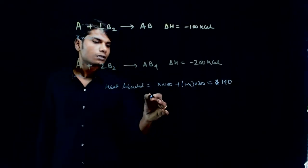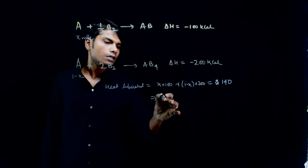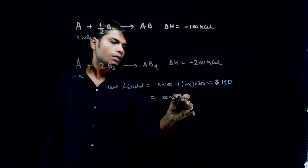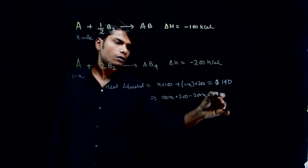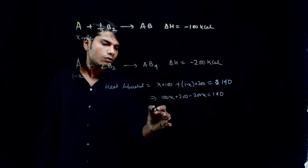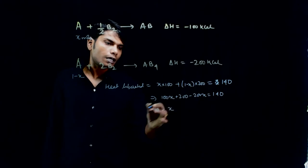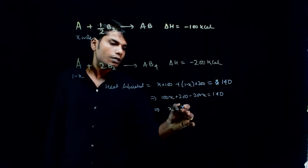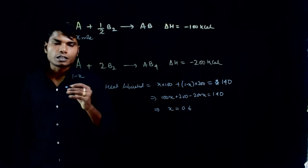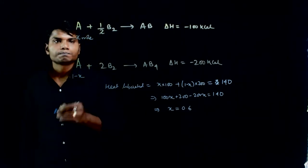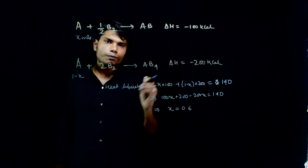This implies that 100x plus 200 minus 200x equals 140. Solving this, x comes out to be 0.6 mole. When you solve this, x equals 0.6.